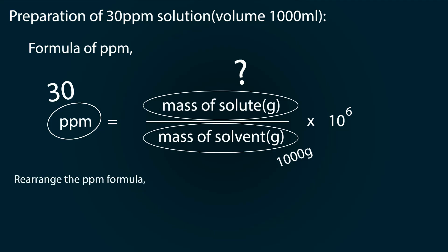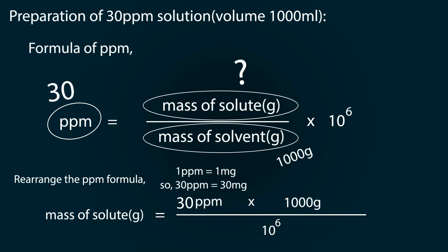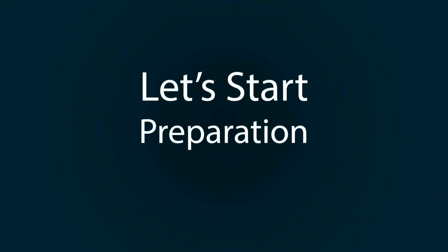Now rearrange the formula. Mass of solute equals ppm multiplied by mass of solvent divided by 10 raised to power 6. We have 30 ppm and 1000 grams of solvent. 1 ppm equals 1 mg, so 30 ppm equals 30 mg. On the other hand, 1000 grams equals 10 raised to power 6 mg. After calculation, we get mass of solute as 30 mg. Let's start our preparation.